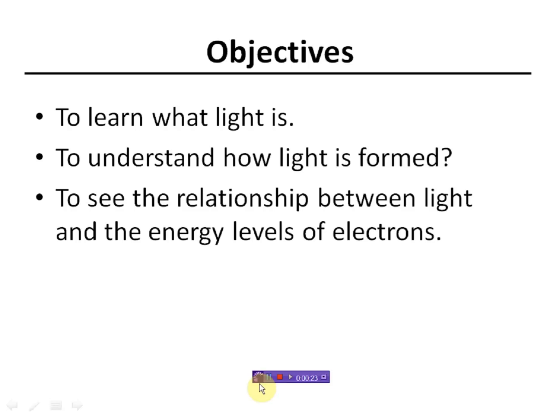I want you to understand how light is formed, and it's going to tie in with our last bullet here to really understand the relationship between light, the energy levels we've already learned about, and electrons. So we've got three things going on here. What is light? How is it formed? And what's this relationship between light and energy levels and electrons?